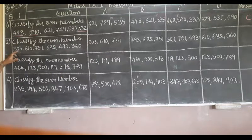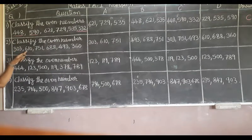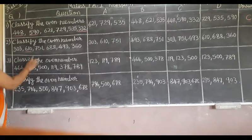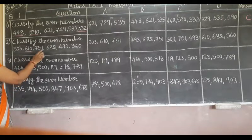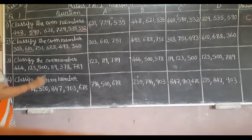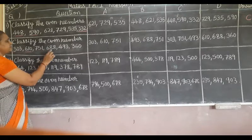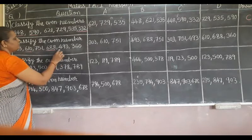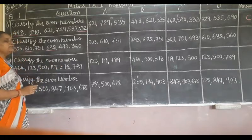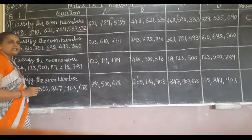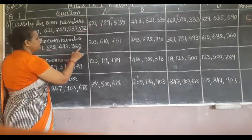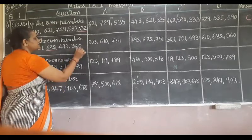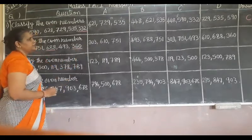Next: 333 — odd number. 610 — even number. 705 — 5 is odd number. 688 — 8 is an even number. 493 — 3 is an odd number. 360 — 0 is an even number.